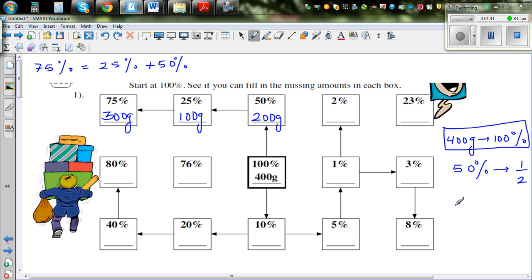Now can we find 10%. Now 10% as a fraction is 10 out of 100 which is 1 tenth. If you find 1 tenth of anything that is you are finding 10%. So 400 divided by 10 or 1 tenth of 400 is 400 divided by 10 which is 40 grams.